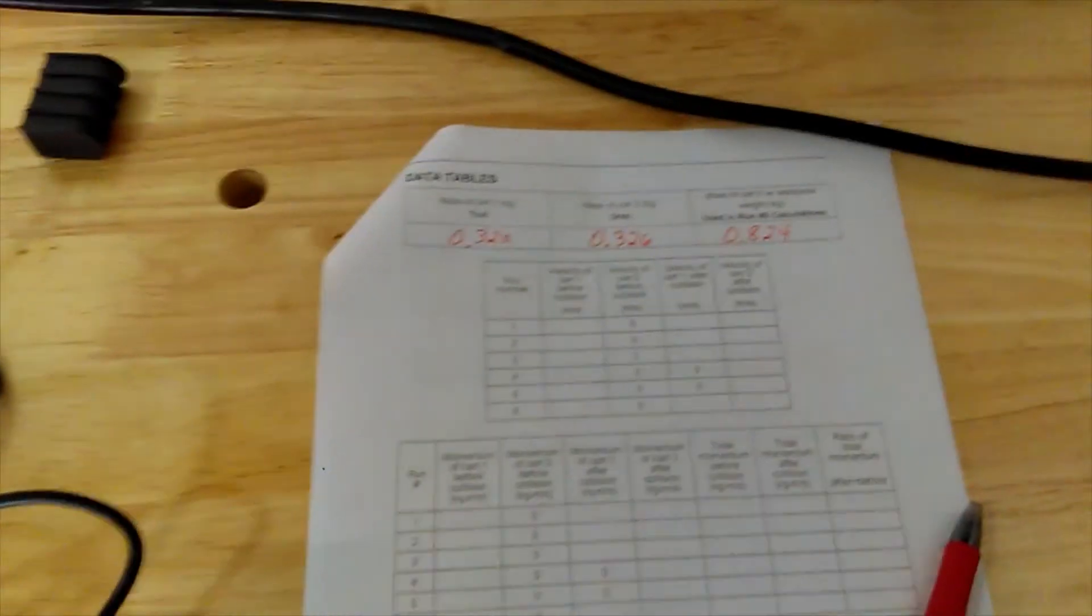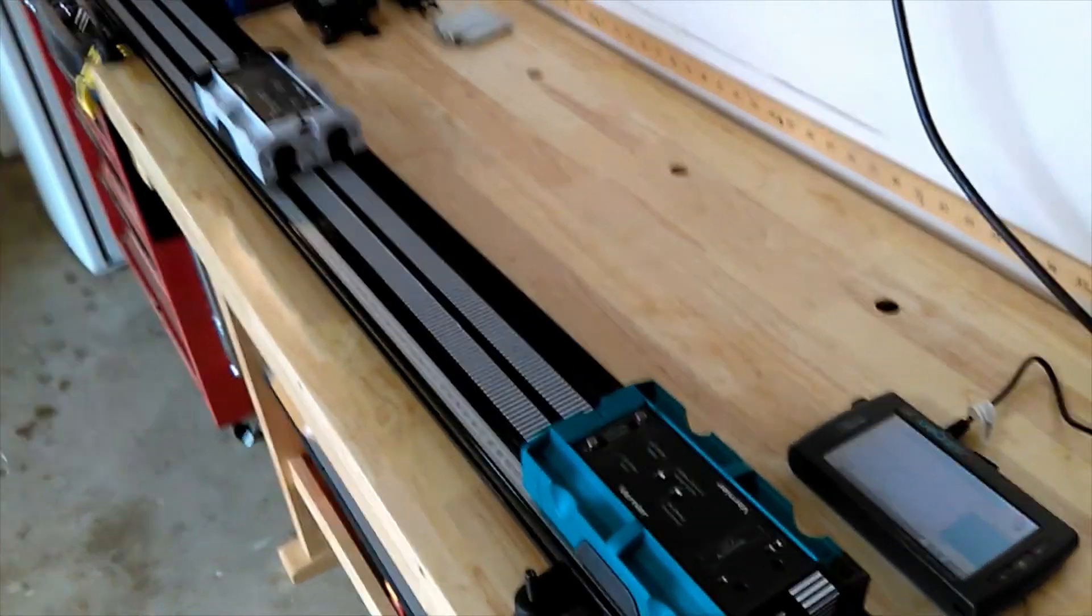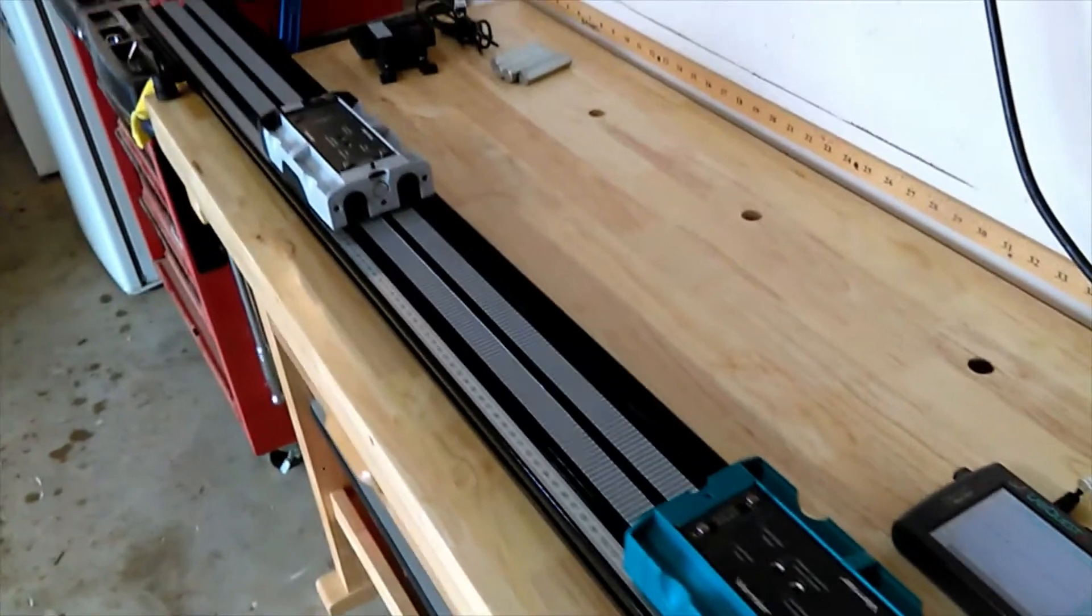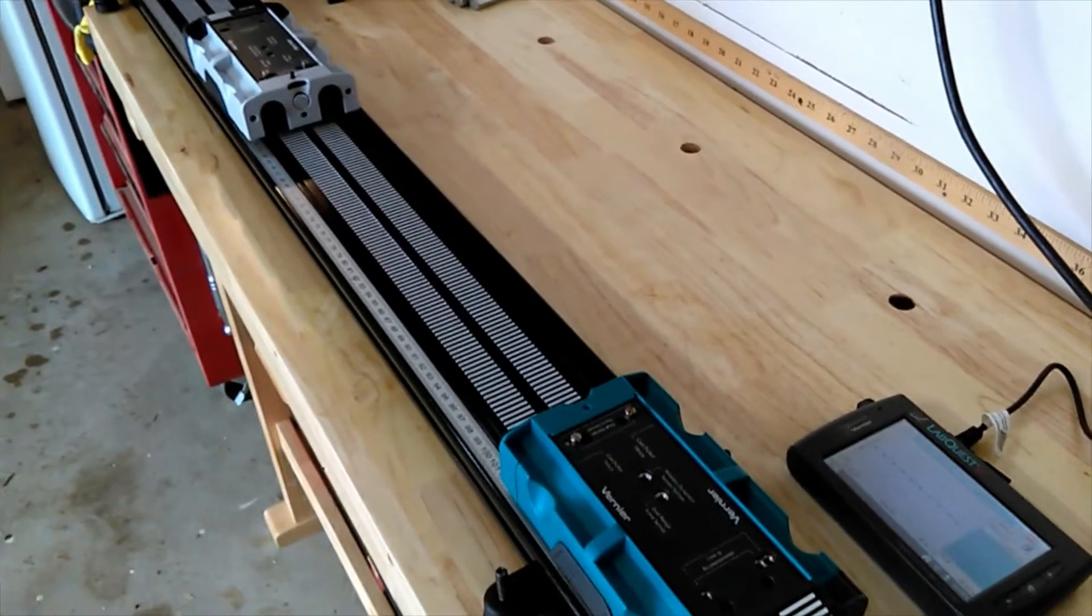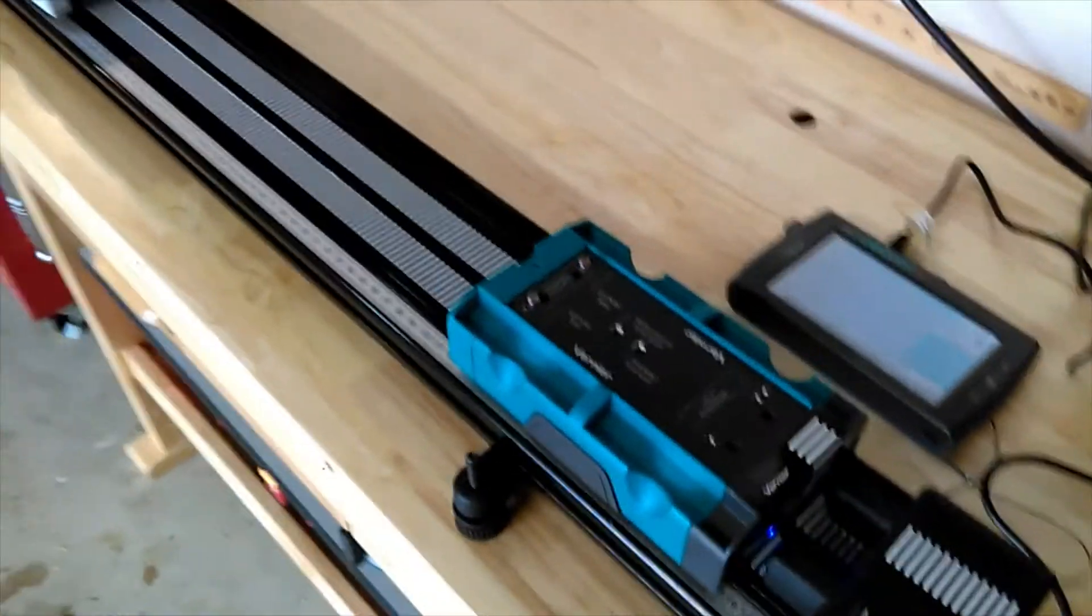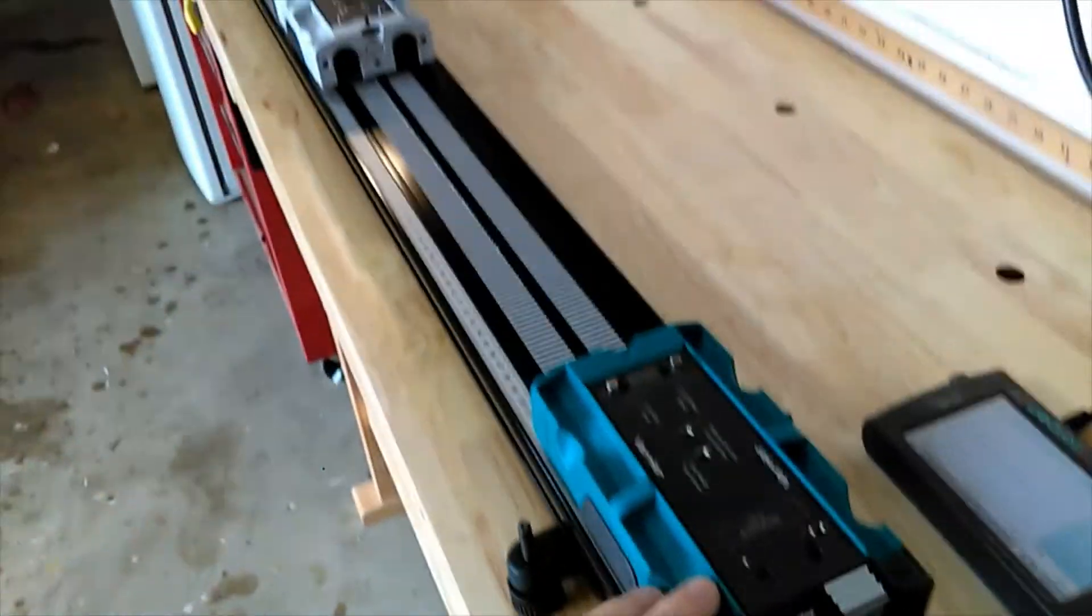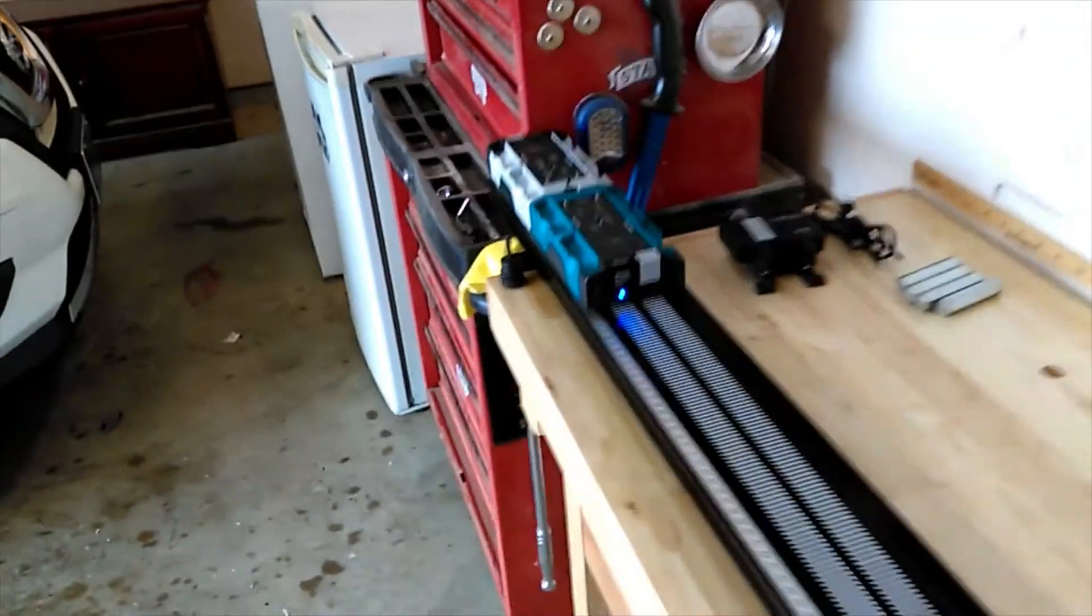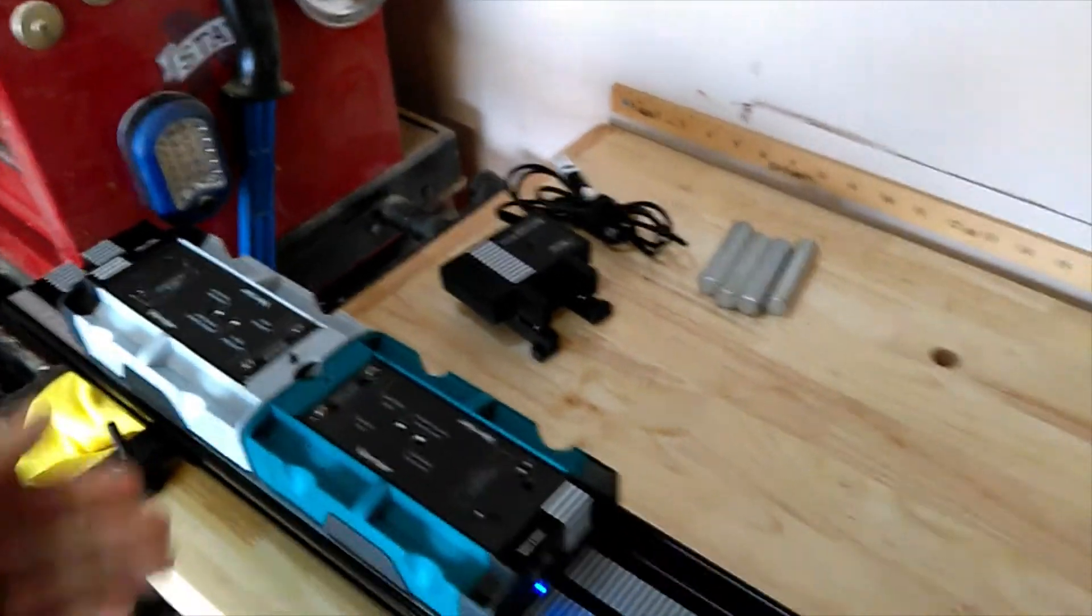We're set up for run number one. Runs one, two, and three are all similar, so I'm just showing you run one. We've got our car sitting here stationary. I'm going to start collecting data and give this car a push. Notice it collides with the second car, and once that collision occurs, it really slows down.